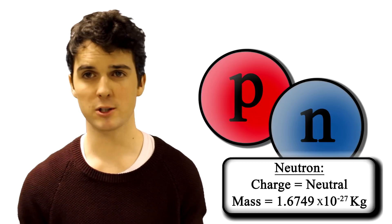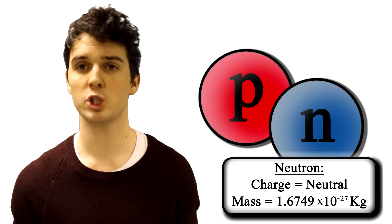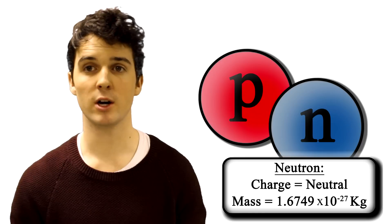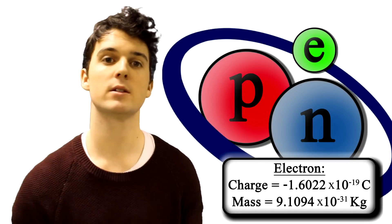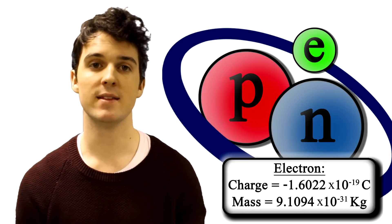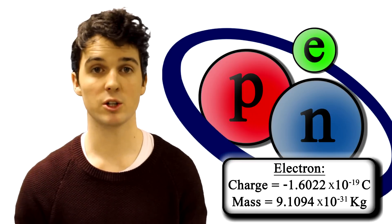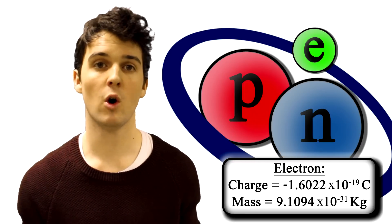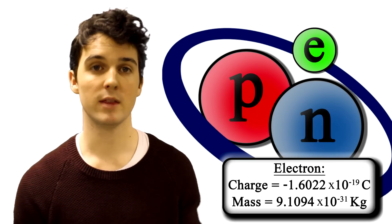The neutron is almost identical, except it has a slightly greater mass and it has no overall charge. But there is an outsider: the electron. It orbits round the nucleus and has a very small mass compared to that of the proton and neutron. It also has a negative charge, which makes the overall charge of the atom neutral. There's so much empty space between the nucleus and the electron that if you scaled it up to the size of a 2p coin, the nearest electron would be a mile away.